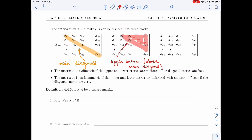And then we have the ones below the main diagonal, or the lower entries. So these are the lower entries.